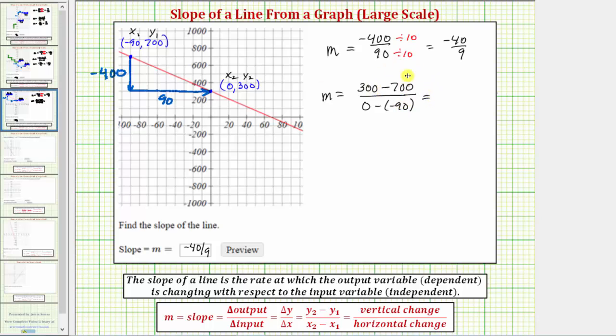Simplifying, 300 minus 700 is negative 400, 0 minus negative 90 is 0 plus 90, or 90. We know this simplifies to negative 40/9.